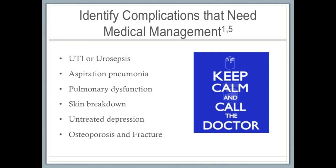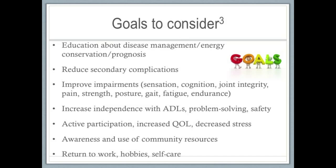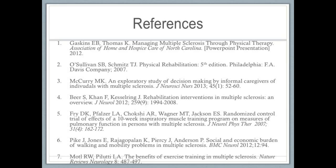There are certain medical conditions that PTs should be aware of when working with people with MS. UTIs can increase spasticity, and aspiration pneumonia or pulmonary dysfunction can affect endurance. Skin breakdown is more likely in people with advanced MS who have very limited mobility. Osteoporosis can increase risk of fractures, and untreated depression can slow or prevent recovery. Identifying these complications that may require referral to a doctor helps us effectively manage our patients. The following are specific goals to consider when working with patients with MS in order to optimize care and manage their needs.